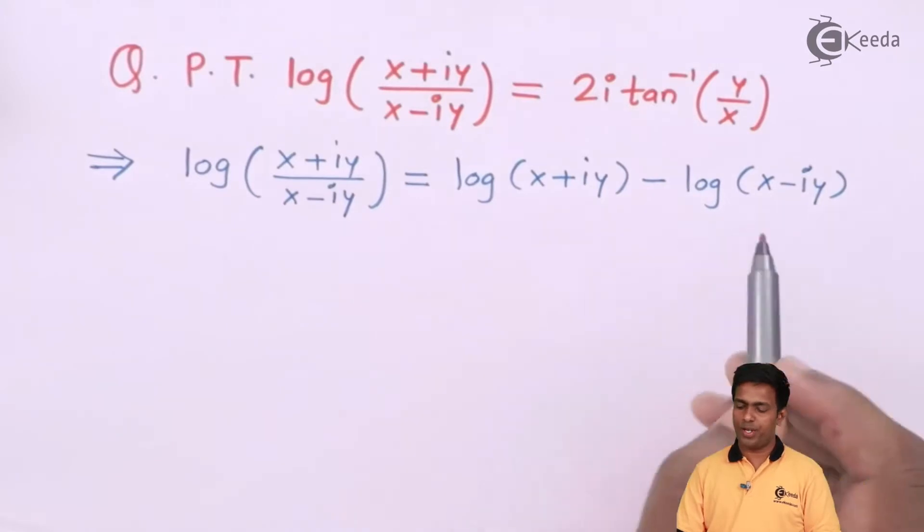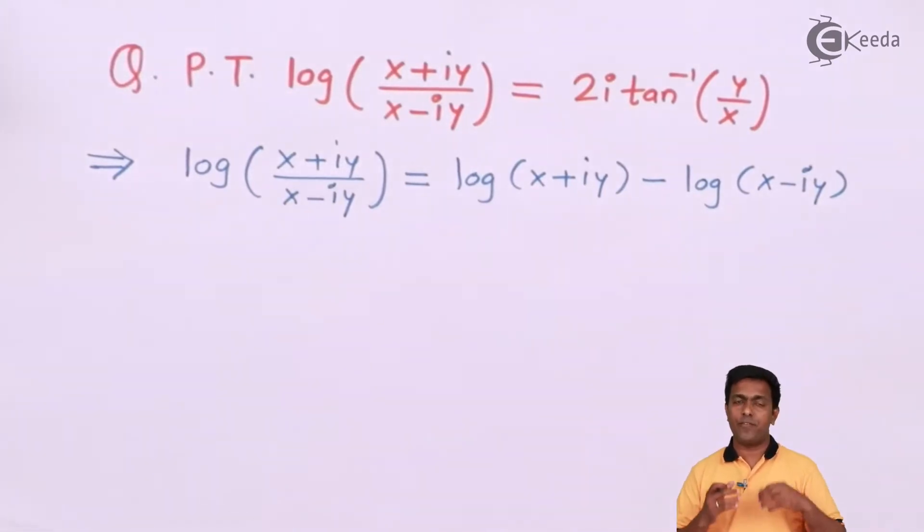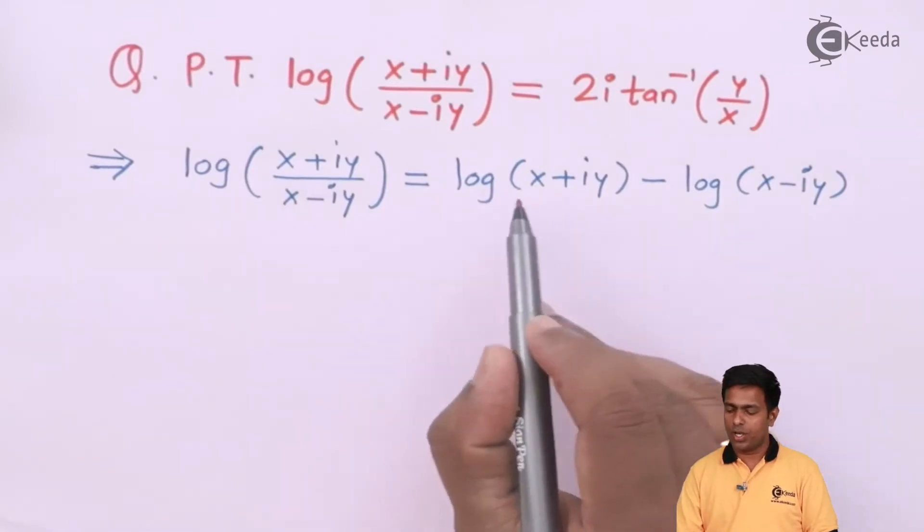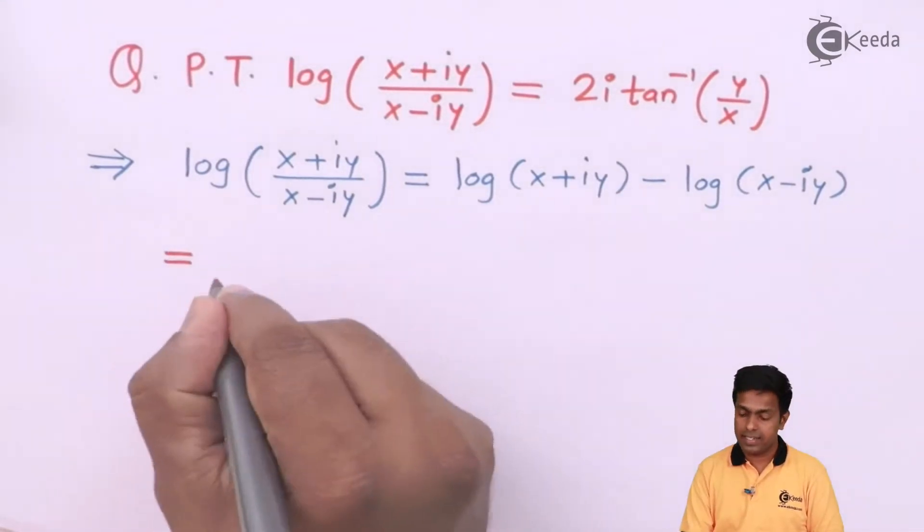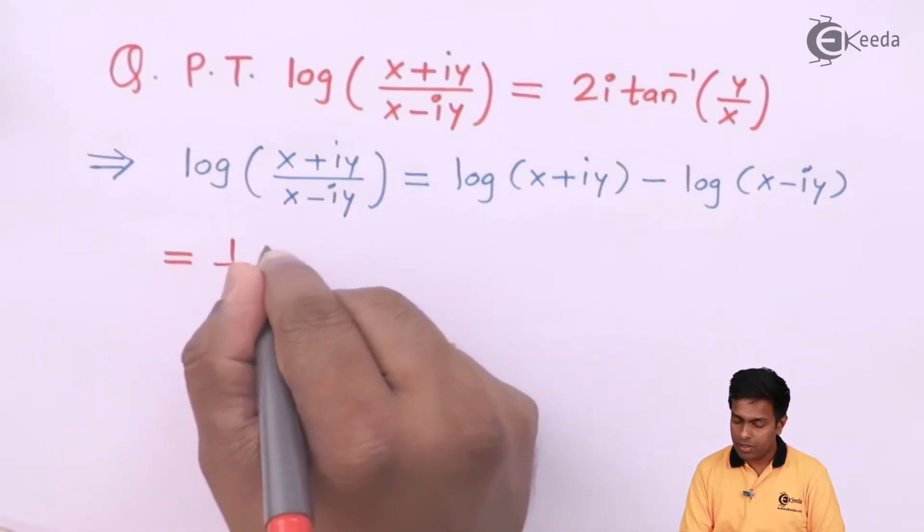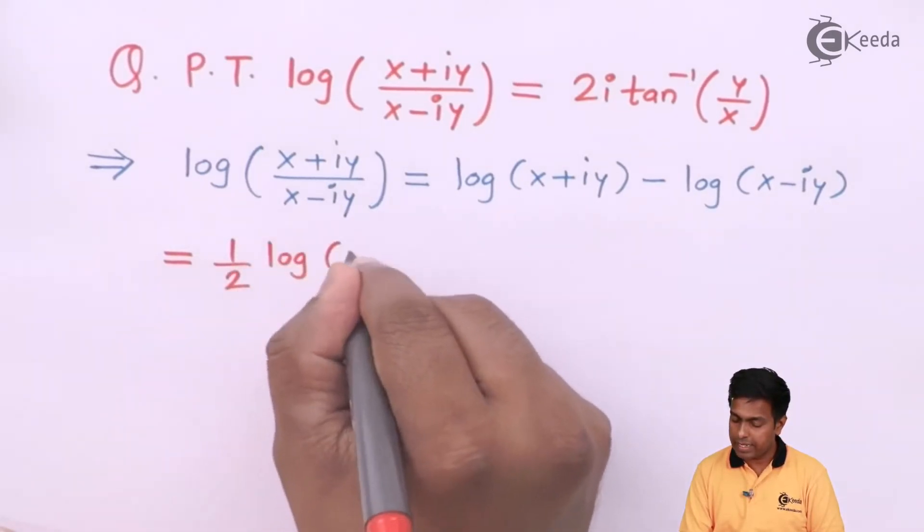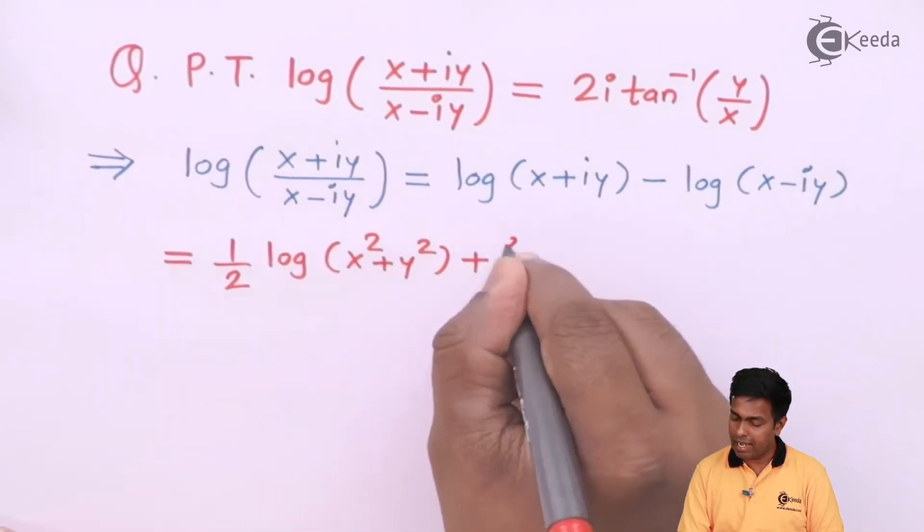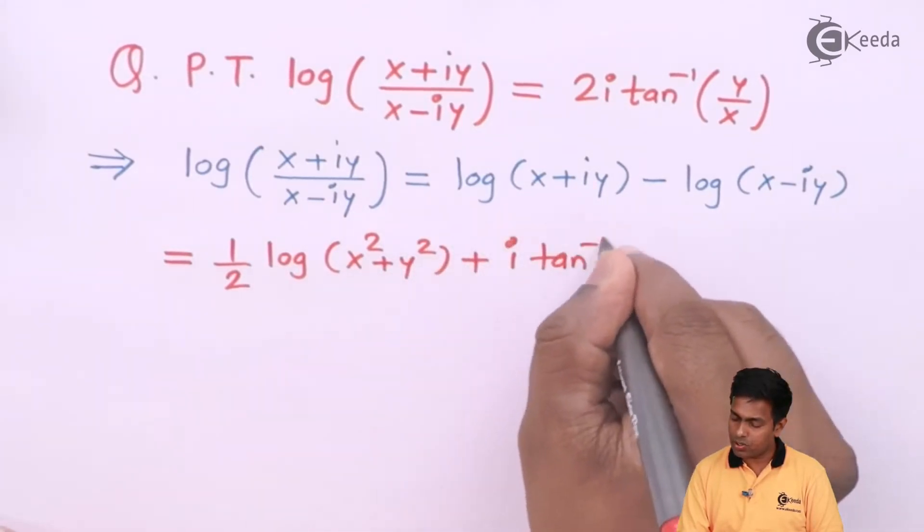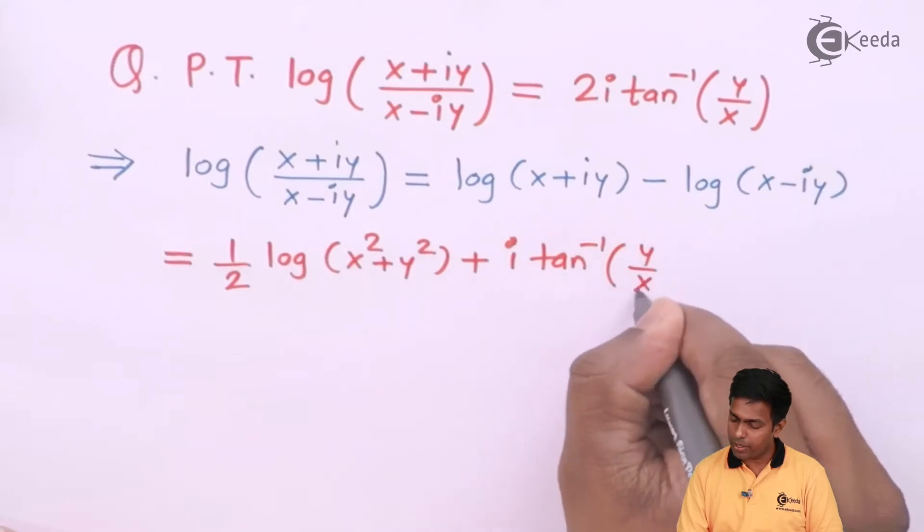After applying the formula, we will apply the formula of log of a complex number two times. For the first term we will get half log of x square plus y square plus i tan inverse of y upon x.